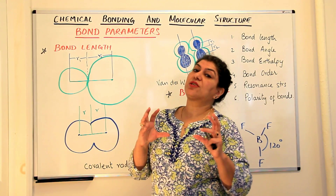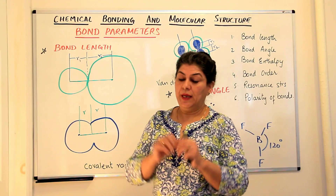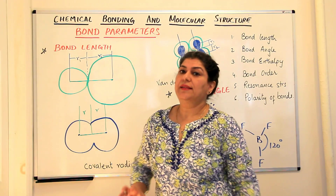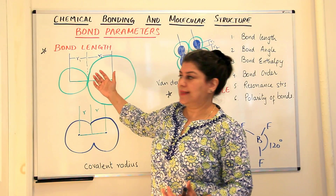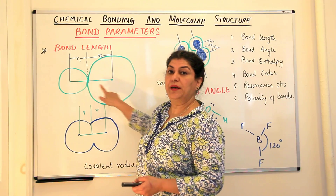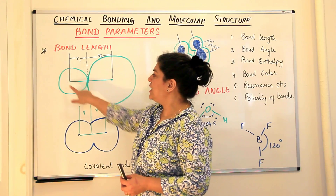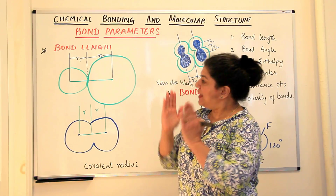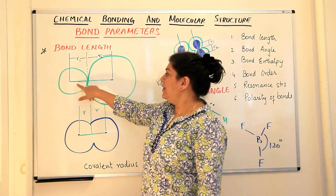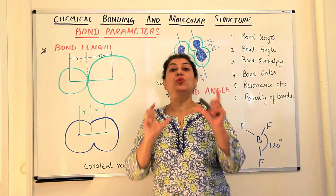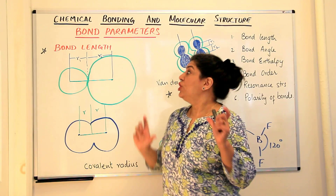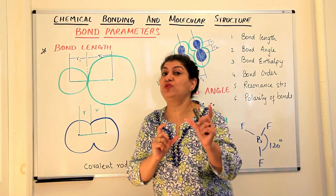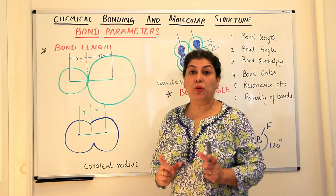If we imagine atoms to be spheres and we imagine that when they are bound these spheres are together, then how would you define bond length? Let us say that these are two atoms — atom one and atom two — and as you see I've made them of different sizes. So atom one and atom two are atoms of different elements, and when they join together they form a bond. The distance between the nuclei of these two atoms is the bond length.